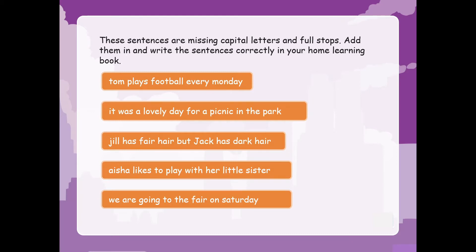These sentences are missing capital letters and full stops. Add them in and write the sentences correctly in your home learning book. Tom plays football every Monday. It was a lovely day for a picnic in the park. Jill has fair hair but Jack has dark hair. Aisha likes to play with her little sister. We are going to the fair on Saturday.